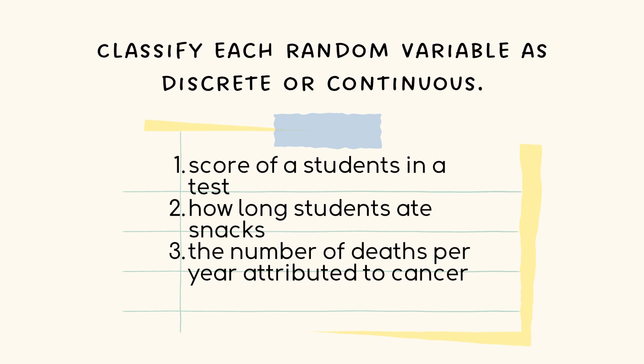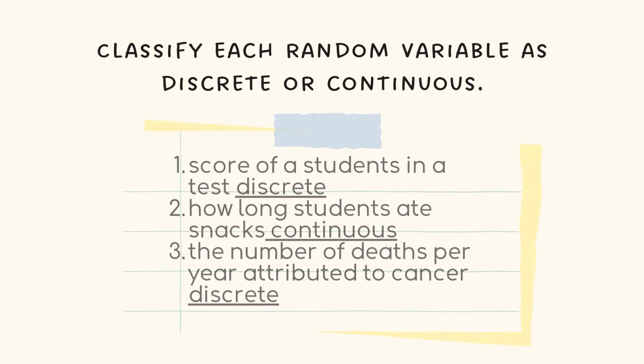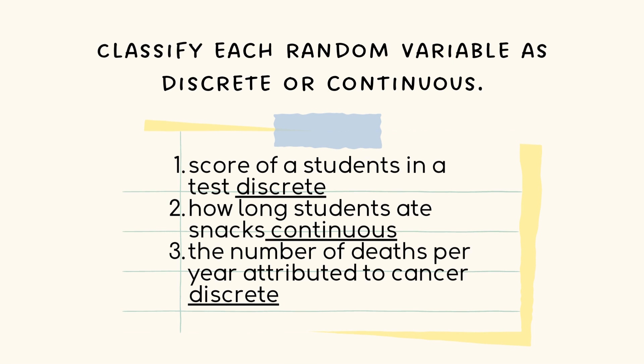The score of students in a test, how long students ate snacks, the number of deaths per year attributed to cancer. Answers: scores of a student in a test, it's discrete. How long students ate snacks, it's continuous. The number of deaths per year is discrete. Discrete can be counted while variables only discrete.